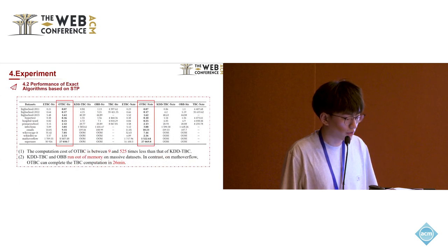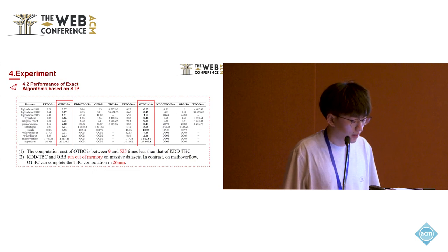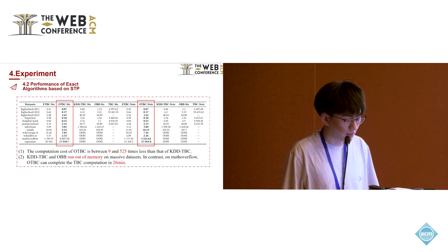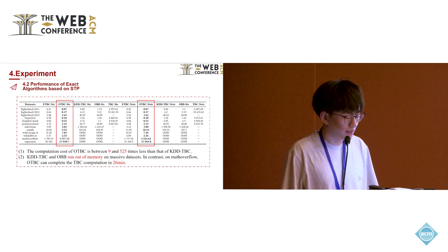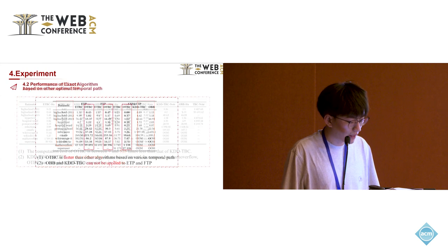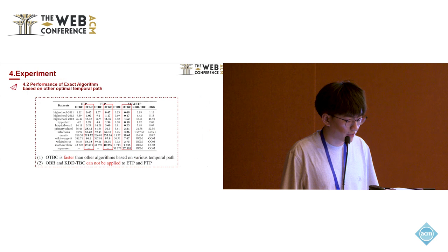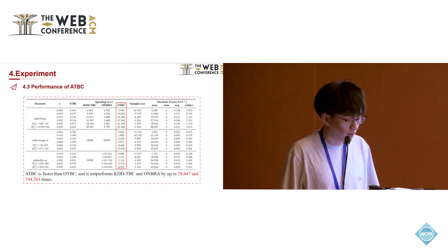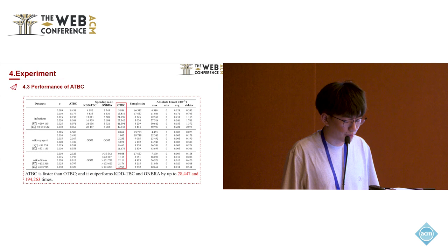For the exact algorithm based on shortest temporal path, we found that the computation cost of OTBC is 9 to 525 times lower than the compression algorithm. The compression algorithm runs out of memory on massive datasets. In contrast, OTBC can complete TBC computation in 26 minutes. For other optimal temporal path types, OTBC outperforms other algorithms. Additionally, ATBC is faster than OTBC and outperforms the KDD algorithm and the compression algorithm by up to 28,447 and 194,263 times respectively.